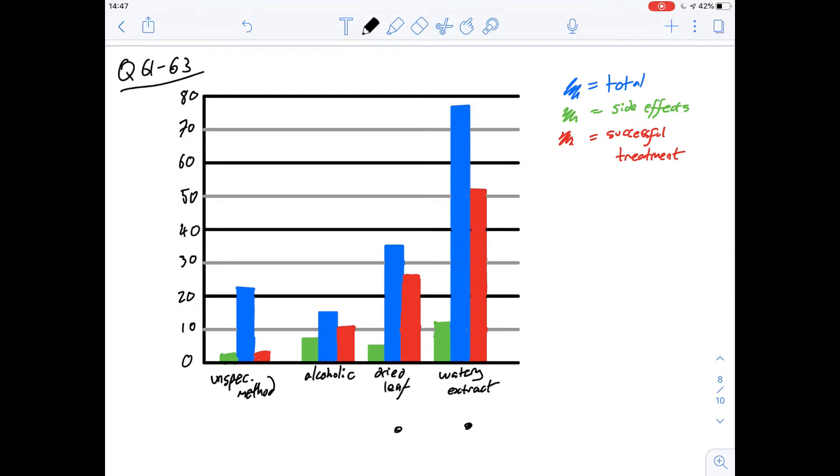So why is that important? Well obviously we're told that this is a heart medication and it was used a lot and using a dried leaf preparation if that increases the percentage of patients that were treated successfully then that would be an advantage. So the answer for this one which is 61 is going to be B.